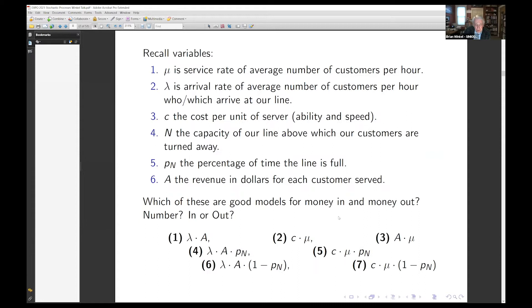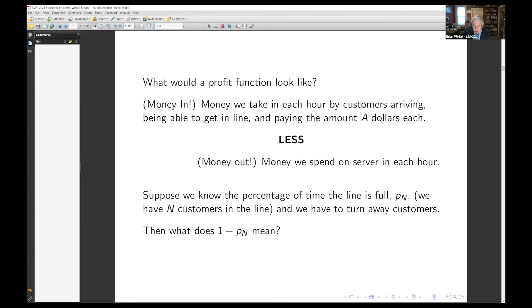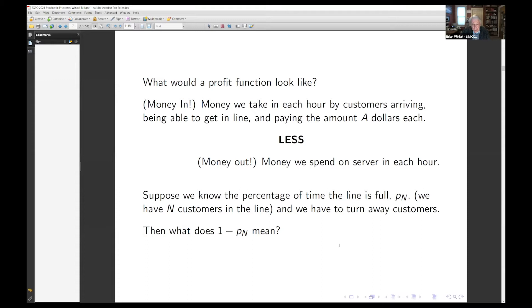Before we do anything, I want to go back to a little notion. P_n will be the probability that we have n customers in the line. What does 1 minus P_n represent? It represents the probability that we don't have n people in the line, that we have openings. Which of these terms might model revenue in? Which of them might model revenue out?